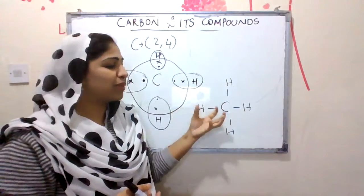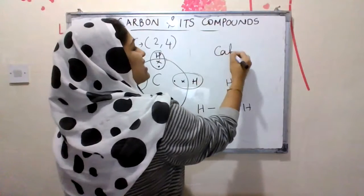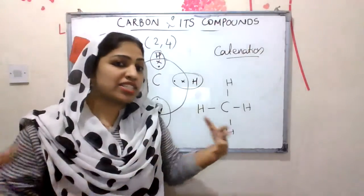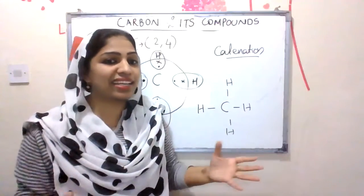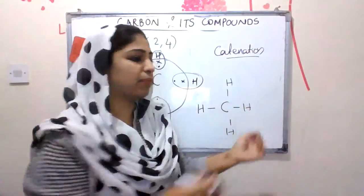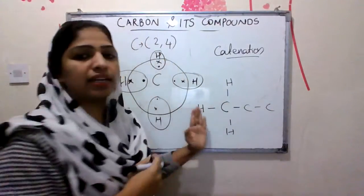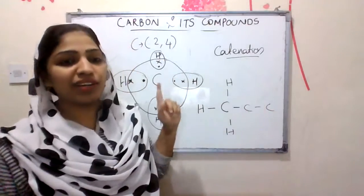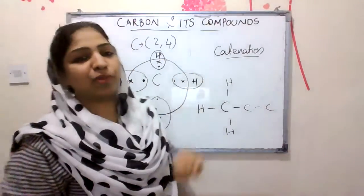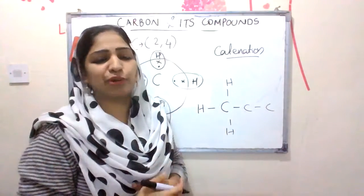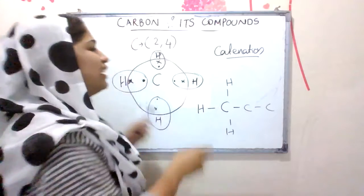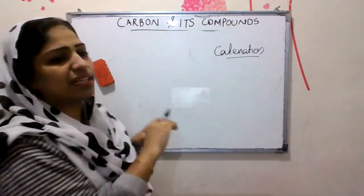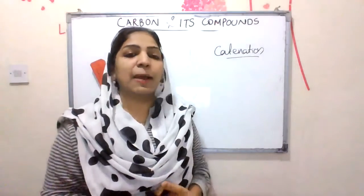Carbon is one of the most important elements we study in compounds. Carbon has one of the most important properties called catenation. Catenation means carbon can form long chains, branched chains, or cyclic structures. Carbon connects with the same elements — the same carbon atoms can link together. This is a very important property of carbon called catenation.